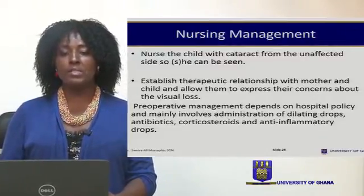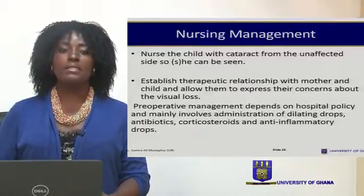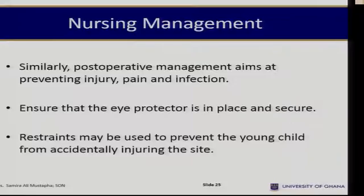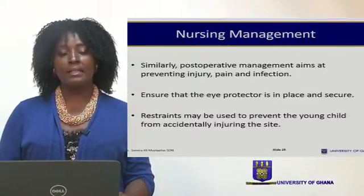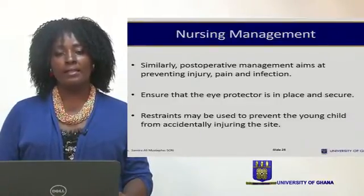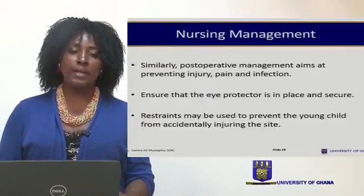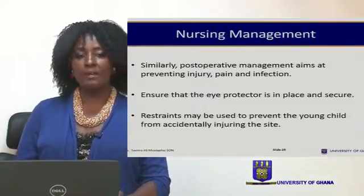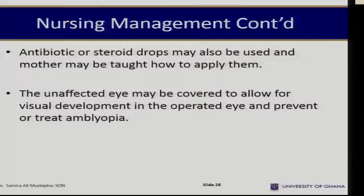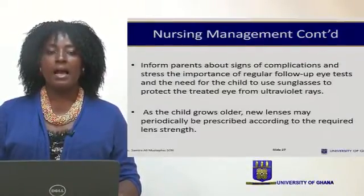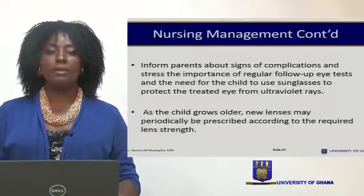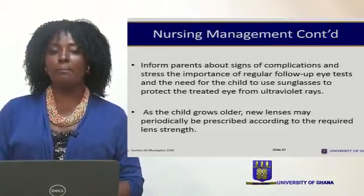Drugs such as antibiotics, corticosteroids, and anti-inflammatory eye drops are used and must be applied to the inner canthus of the eye. Postoperative management aims at preventing injury, pain, and infection — the same corticosteroids, antibiotics, and steroids are given. Eye protectors are placed on the eye to prevent injury, and the child must be restrained from causing further injury to the affected eye. The unaffected eye is also often covered after surgery to ensure full recovery. Parents are informed of the signs of complications, and the importance of follow-up is stressed.